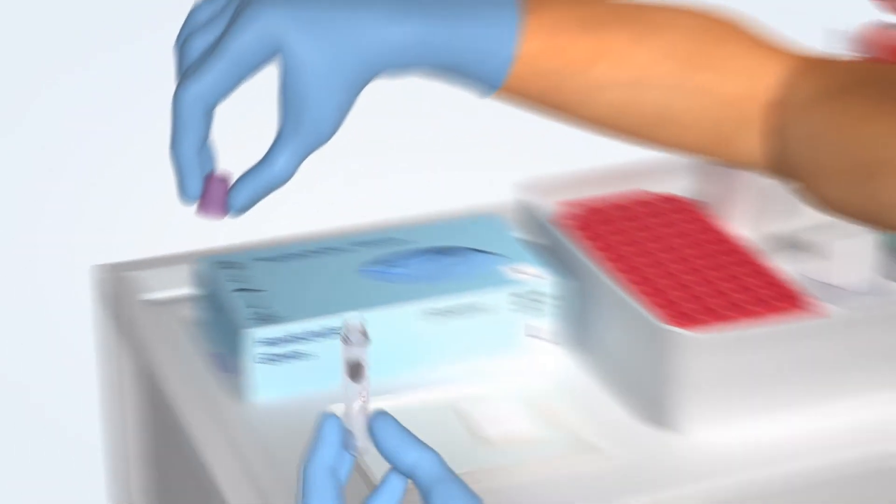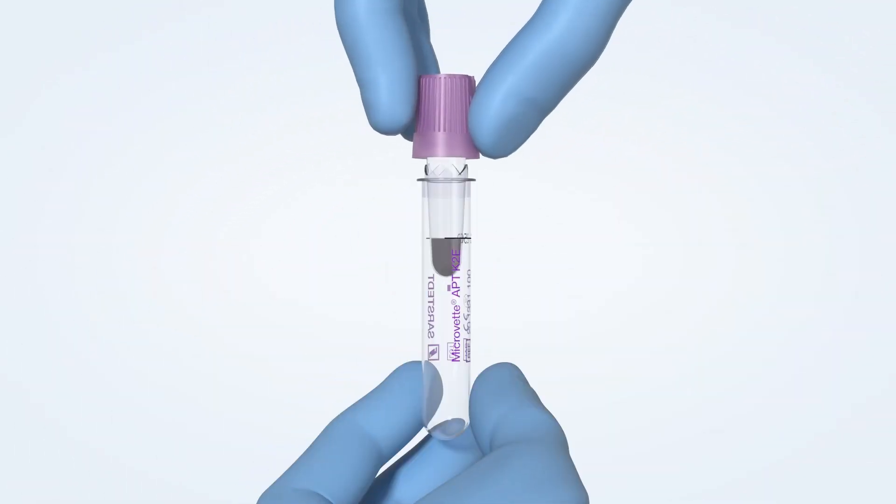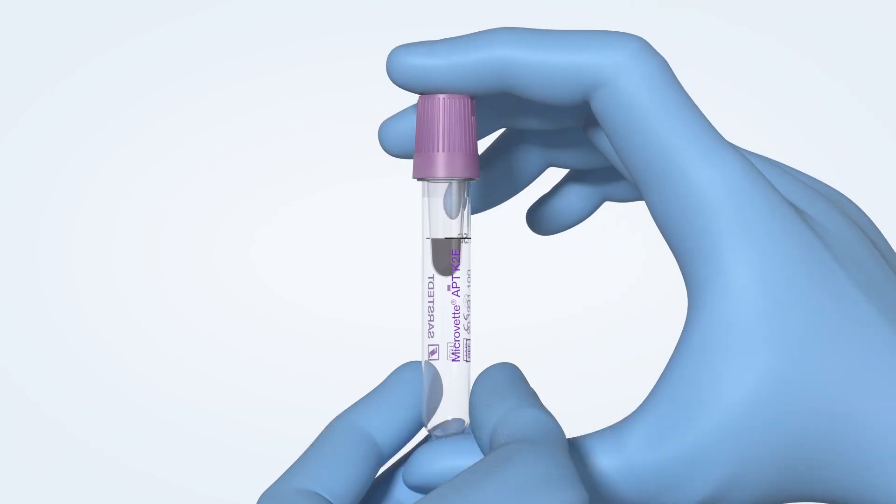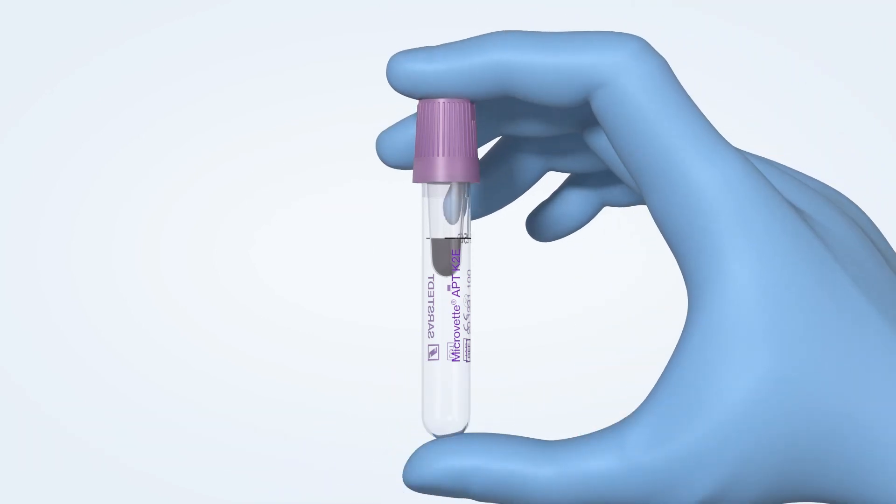Take the cap and close the Microvette APT with an audible click. Gently invert the Microvette APT four to six times.